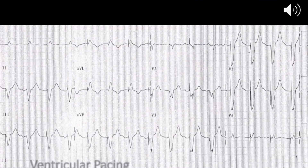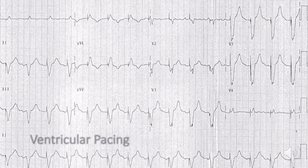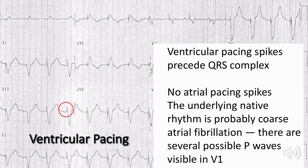The next example is a ventricular pacing ECG. As you can see in the red circle, there is a ventricular pacing spike that precedes the QRS complex, and there are no atrial pacing spikes preceding any P wave. In this particular case, the underlying native rhythm is likely atrial fibrillation, because you can see several possible P waves in V1, but otherwise the atrial activity is chaotic.